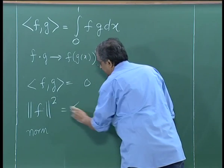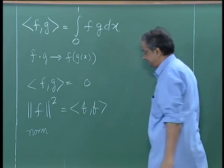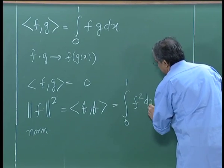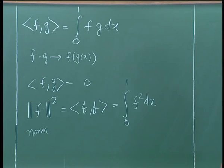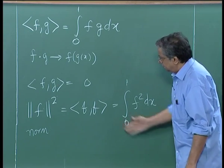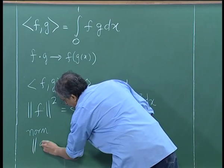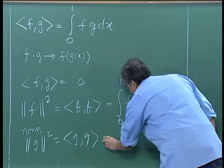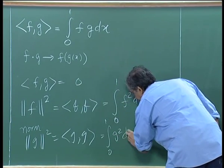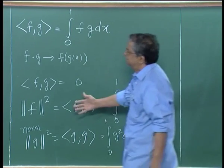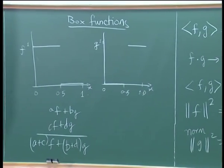Right now I am interested in defining a magnitude — something like a magnitude; in the case of a function it is called a norm. We define a norm that comes from the dot product, just like we did with vectors. So I could define the square of the norm as ⟨f, f⟩, which turns out to be the integral from 0 to 1 of f² dx. Similarly, ‖g‖² = ⟨g, g⟩ = integral from 0 to 1 of g² dx.